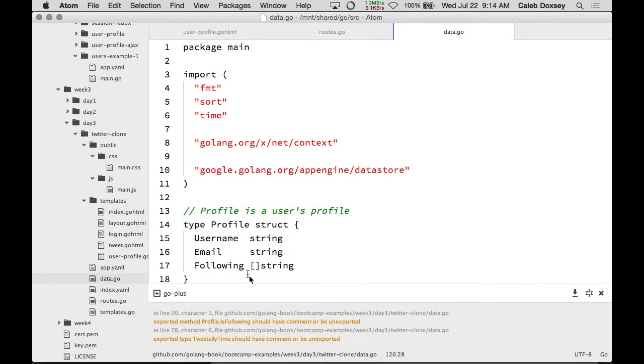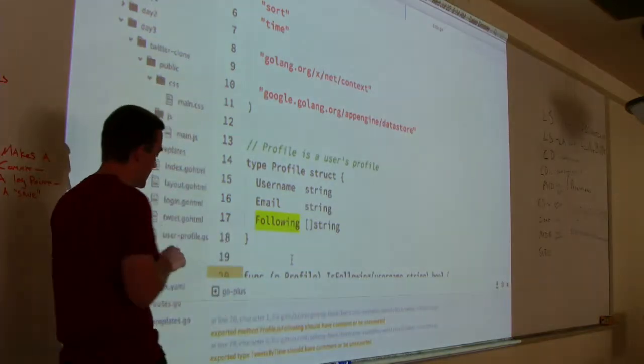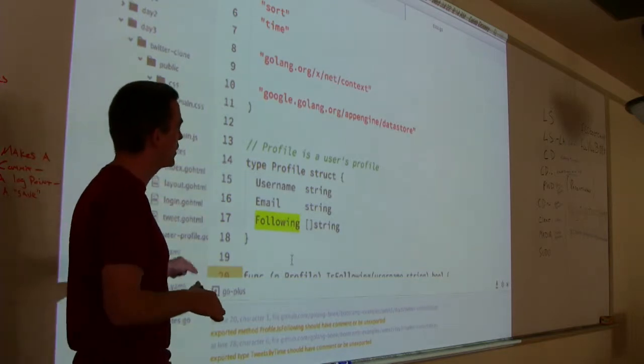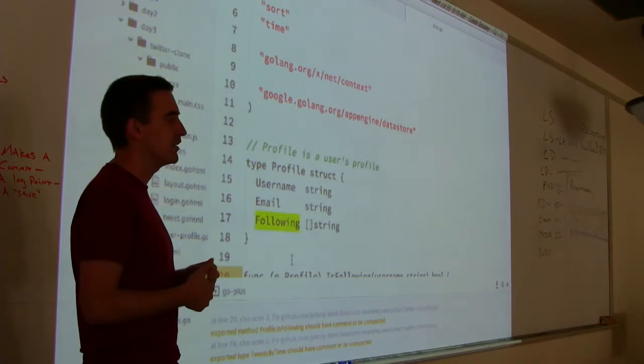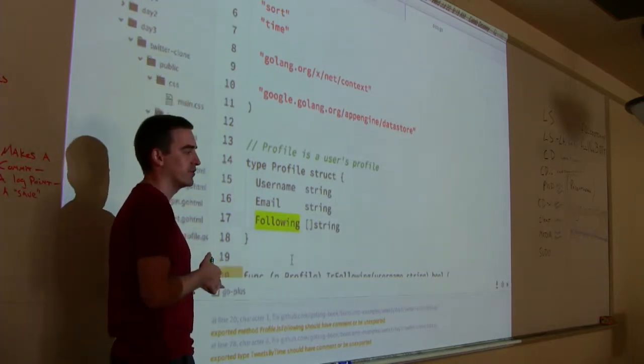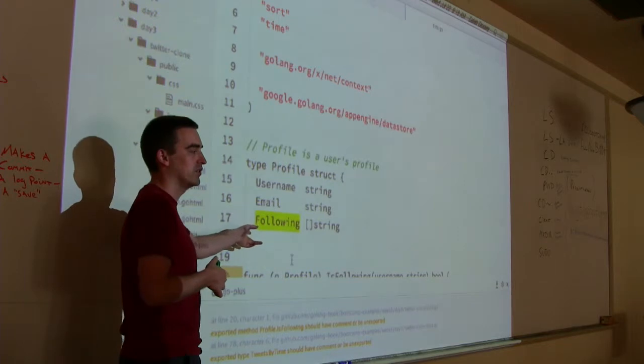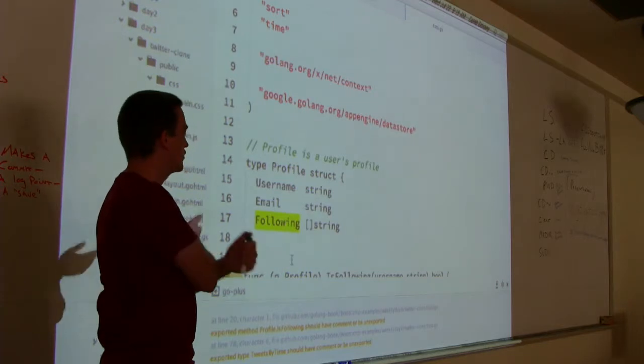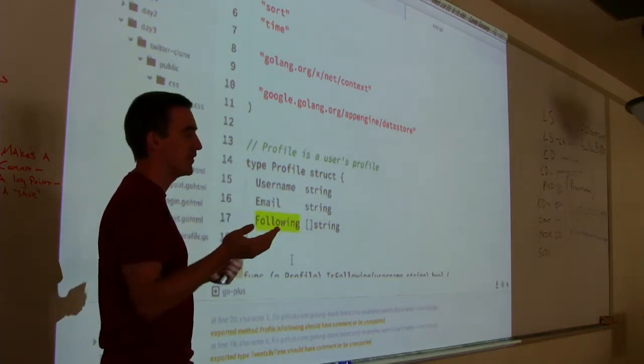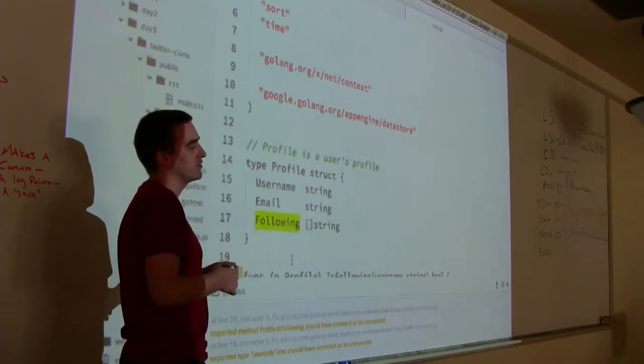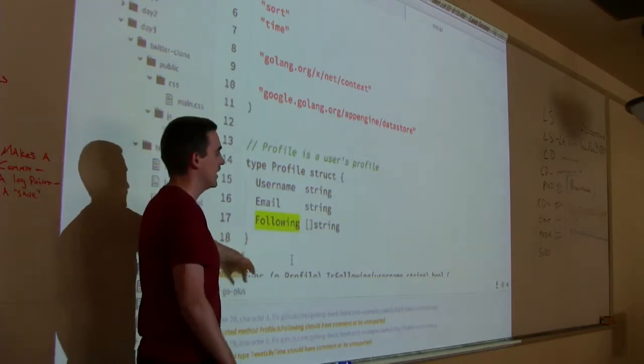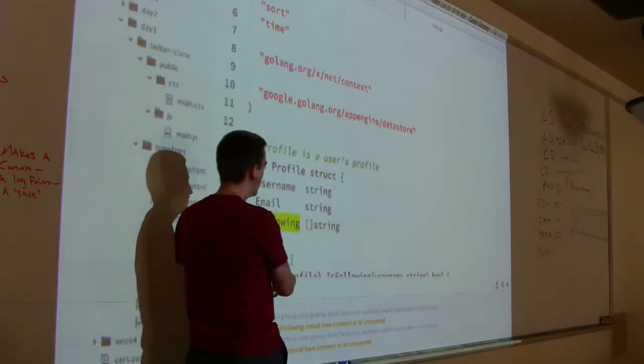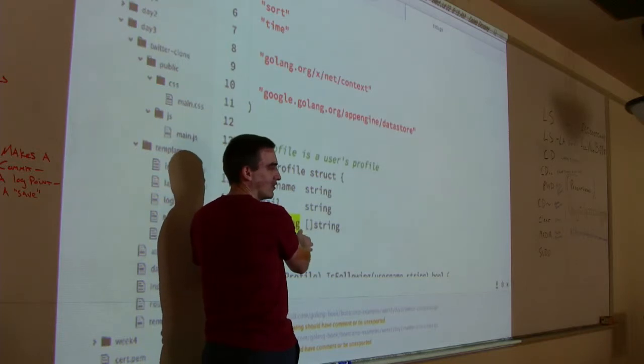So, the question is, how can we make it better? So, what are things? We talked a little bit about ways we can restructure this data. One would be changing this to followers. If we did that, that would make getting, it could make getting the, make one of these queries faster, but then the other one slower. So, right now, getting the list of people I'm following is faster because it's just sitting in the profile. But figuring out my home timeline is slow. And so, I could switch it and now the other one might be faster.